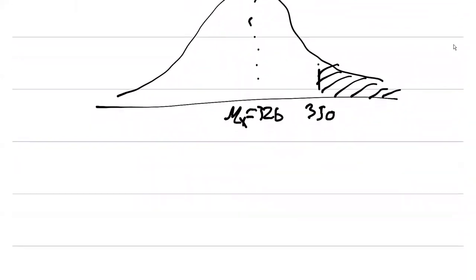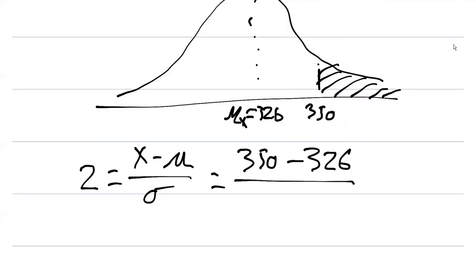To do that we can go back to the z score calculation. Remember the z score calculation with z equals x minus μ divided by σ. So here the value x that we're interested in is 350 minus the mean value we calculated at 326, divided by 12.24, our standard deviation. When we do that we get 1.96, and so 1.96 is the value of the z score for the calculation here.